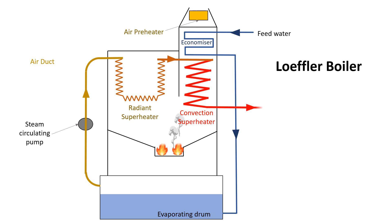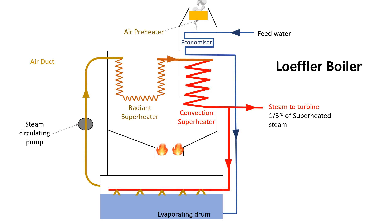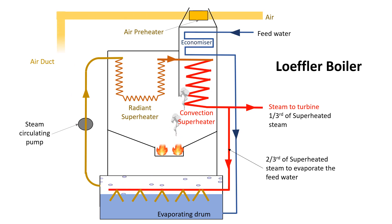So first this saturated steam passes through the tubes of the combustion chamber wall and then entered the superheater. From the superheater, about one third of the superheated steam passes through the turbine, and remaining two third is used to evaporate the feed water in the evaporating drum. And to support the combustion of fuel, a fresh air from the atmosphere passes through the air preheater to the combustion zone.